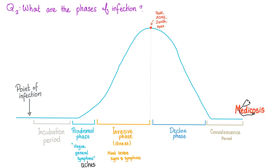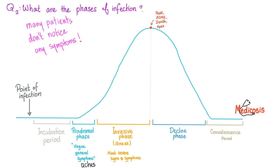Then comes the invasive phase — this is the illness itself, with the most severe signs and symptoms in the entire disease course. If you're talking about COVID-19, expect cough. If it is severe, you might get shortness of breath and fever. Some people might experience upper respiratory symptoms such as sneezing, runny nose, or sore throat.